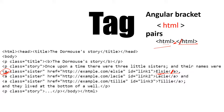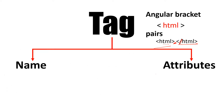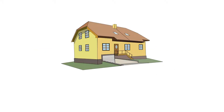Now that we've understood what a tag is, each tag has two important features: one is name and the other is attribute. Let me explain each one with an example. Consider a tag as a home — whatever name you give to your home, that is the name of the tag. For example, 'my house' would be the tag name.